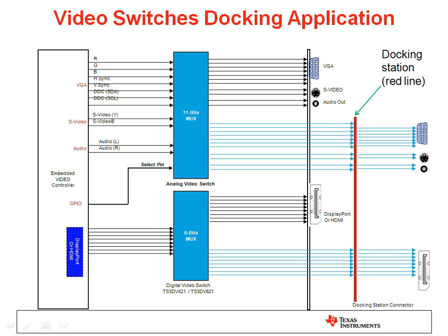Now we move on to video and LAN switches. Some computing applications require that a video signal be transmitted to an external device via a docking station. Those video sources can either be analog or digital, and require analog and digital video switches respectively. For example, analog video signals such as VGA, S-video, or audio signals are muxed to VGA, S-video, or audio-out connectors on the laptop or to a docking station. The red line here represents a docking station.